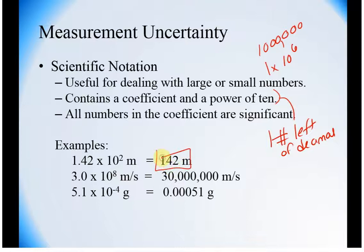All numbers in the coefficient are significant. For example, 1.42 times 10 to the 2 meters is the same as saying 142 meters. 3.0 times 10 to the eighth meters per second is 30 million meters per second. Here we can distinguish that there's 2 sig figs, but here we have no idea. 5.1 times 10 to the minus 4 grams is the same as 0.00051 grams, and we can distinguish the number of sig figs.